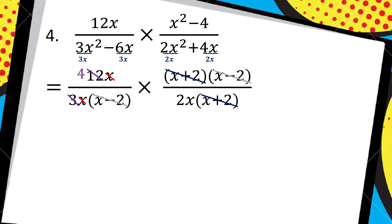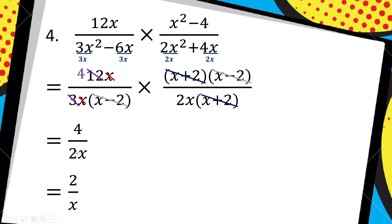Now I need to start cancelling. You can cancel any numerator factor that matches any denominator factor — it doesn't have to be from the same fraction. I cancel out the x minus 2 brackets, then the x plus 2 brackets, then this x with that x, and then 3 goes into itself once and into 12 four times. Looking at what's left: in the numerator I have 4, and in the denominator I have 2x. That gives 4 over 2x. But I can simplify further: 4 over 2 is 2, so my final answer is 2 over x.